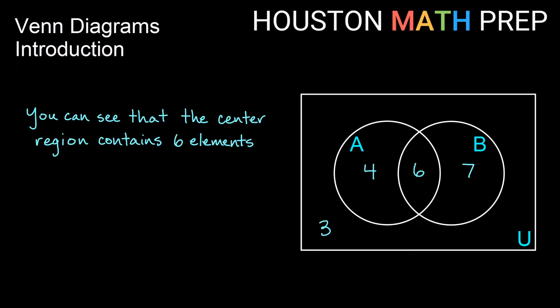So right away, if I look in the center, I can see I have six elements in the center. Those six elements are in the overlap of both circles. In other words, this six here is in A and it's also in B. And remember, we call that an intersection.